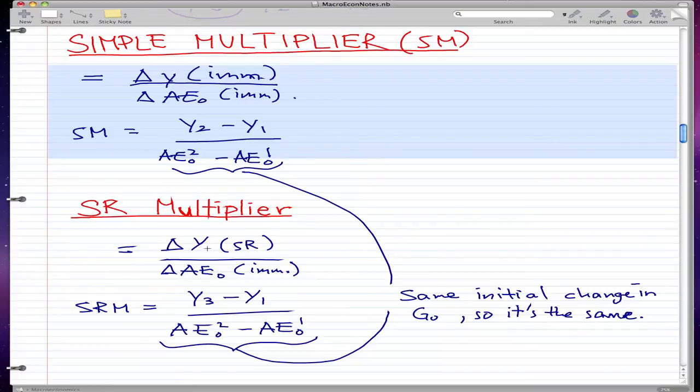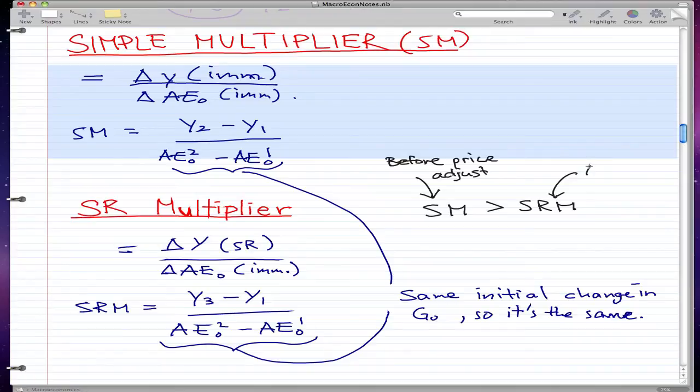And lastly, I want to say that simple multiplier is always greater than the short run multiplier because the simple multiplier is before the price adjusts and the short run multiplier, in the case of our last video, it's after the price adjusts and the short run multiplier ignores price. So that is why the simple multiplier ignores prices. That is why the simple multiplier should be always greater than the short run multiplier.